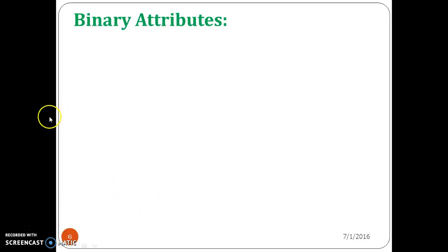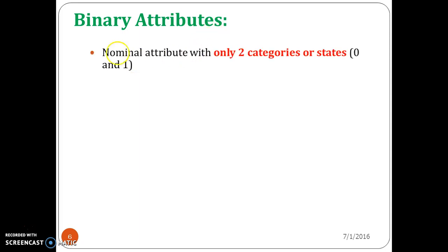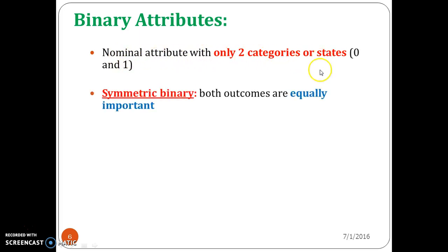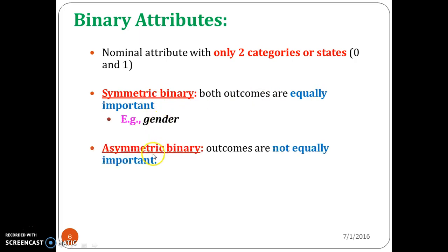Next is binary attributes. Binary means you can have only two values, either 0 or 1 — only two categories or two states. There are two types of binary attribute: one is symmetric and another is asymmetric binary attribute.